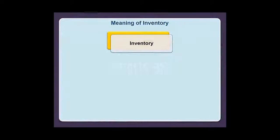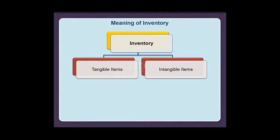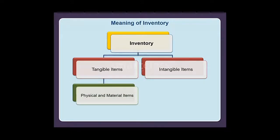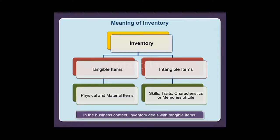An inventory can be made up of tangible as well as intangible items. An inventory dealing with tangible items would include more physical and material items. On the other hand, inventory of intangible items could have skills, traits, characteristics, or memories of life. In the business context, inventory deals with tangible items.